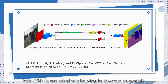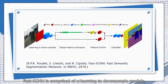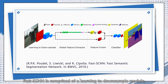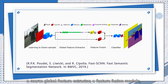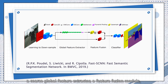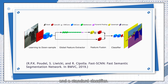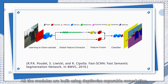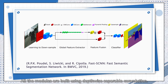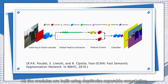FastSANN is comprised of a learning-to-downsample module, a coarse global feature extractor, a feature fusion module, and a standard classifier. All the modules are built using depth-wise separable convolution.